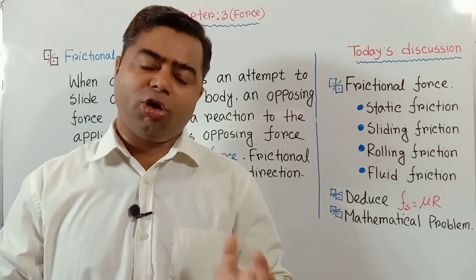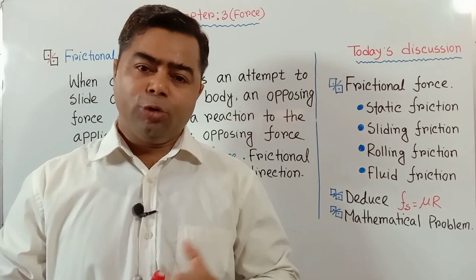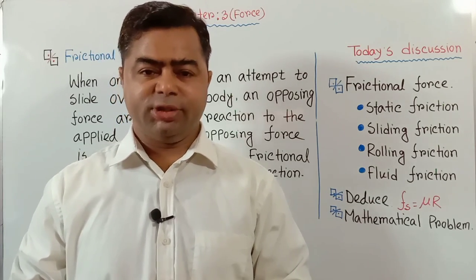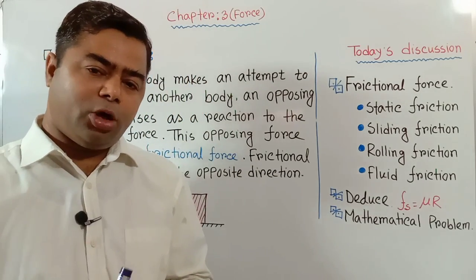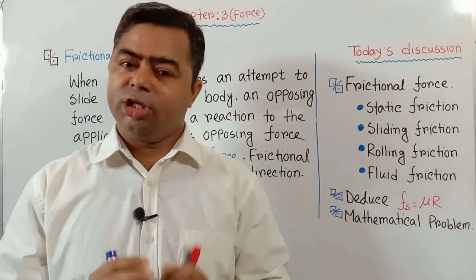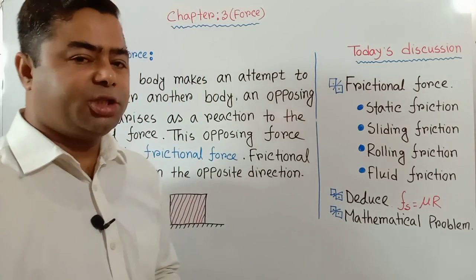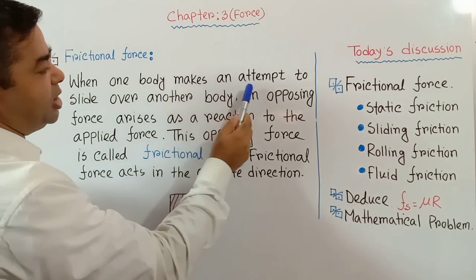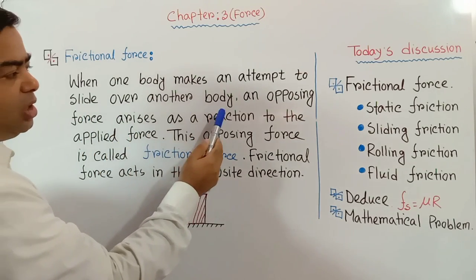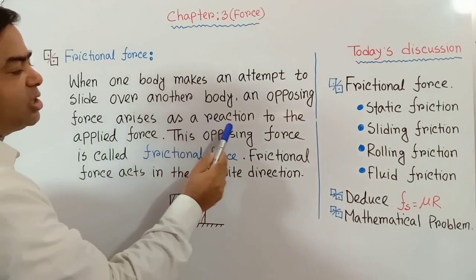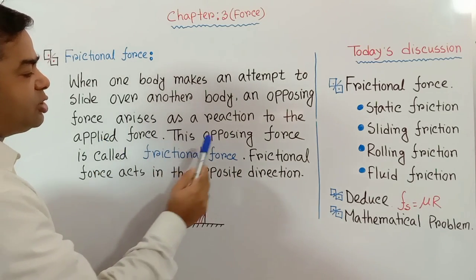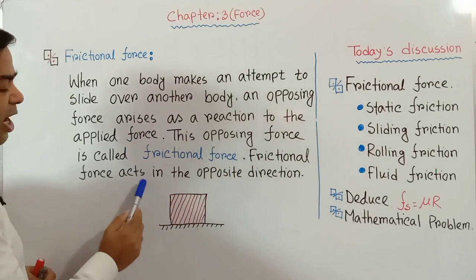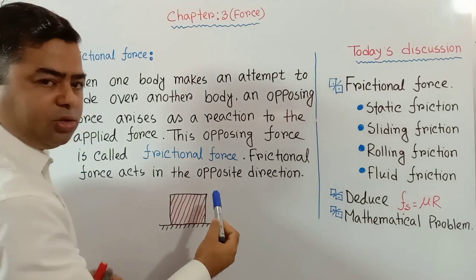If I kick a football on the ground, after some time the football will stop. Why? Because an opposing force arises from the ground on the football. This opposing force is called frictional force. When one body makes an attempt to slide over another body, an opposing force arises as a reaction to the applied force. Frictional force acts in the opposite direction to the applied force.